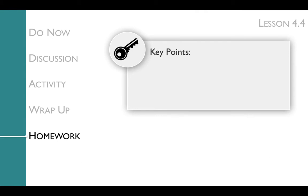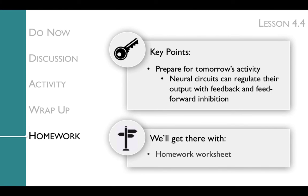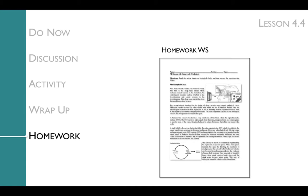The key point of the homework is to prepare for tomorrow's activity and the concept that neural circuits can regulate their output with feedback and feedforward inhibition. We'll get to these key points with a homework worksheet. In the homework worksheet, students will read about the biological clock, yet another control on our sleep-wake circuit, and one that includes feedback inhibition.